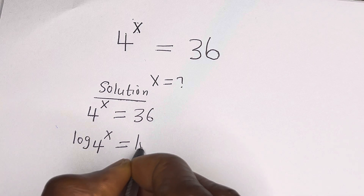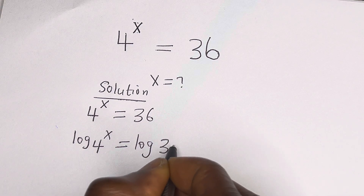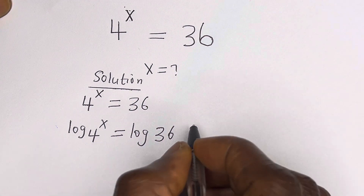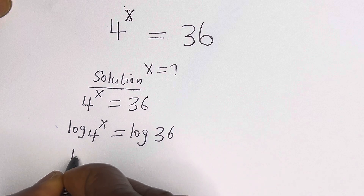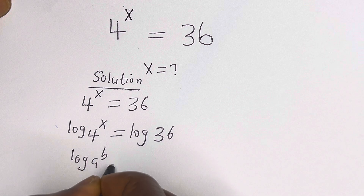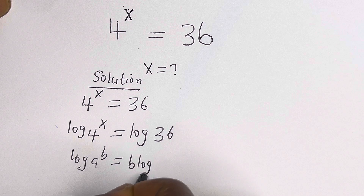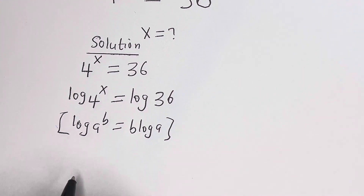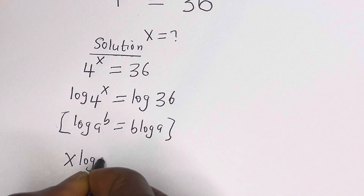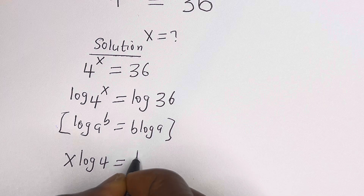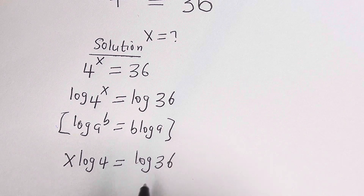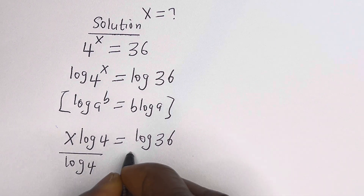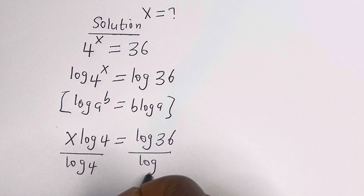Now note that if you have log a raised to power b, this is equal to b log a. Then this can be written as s log 4 is equal to log 36. Let us divide both sides by log 4 — this divided by log 4 and this divided by log 4.